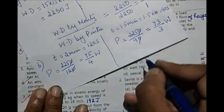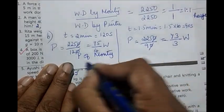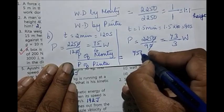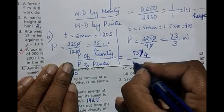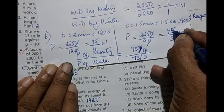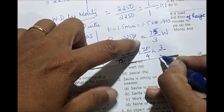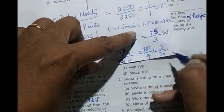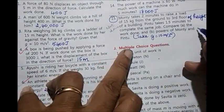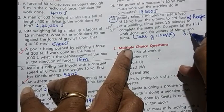Again, we have to find the ratio. Power of Monty upon power of Pintu, which will be equal to 75 upon 4 upon 75 upon 3. You will have 75 by 4 into 3 by 75. Because this comes to the numerator and I take a reciprocal. The 75, 75 will get cut. The answer will be 3 is to 4. So the comparison, the work done is 1 is to 1. Ratio of work done and ratio of power is 3 is to 4.